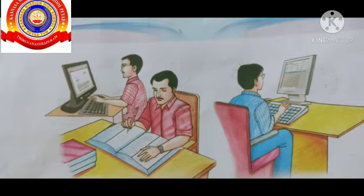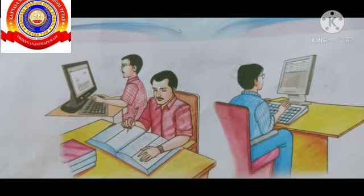Clerks maintain school records and type important letters. For example, if you need the admission date, a copy of birth certificate, or have any inquiry, you go and meet in the office. If you want any letter from the principal, it will be typed by the clerk and signed by the principal.